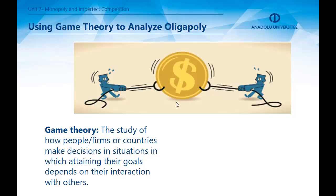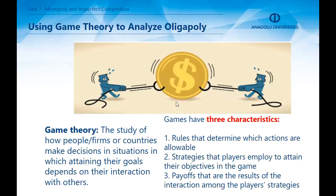We can use game theory to analyze oligopoly. Game theory is the study of how people, firms, or countries make decisions in situations where attaining their goals depends on interaction with others. Games have three characteristics: rules that determine which actions are allowable, strategies that players employ to attain their objectives, and payoffs that are the results of the interaction among players' strategies. In the oligopoly context, payoffs are the profits earned as a result of a firm's strategies interacting with those of other firms.